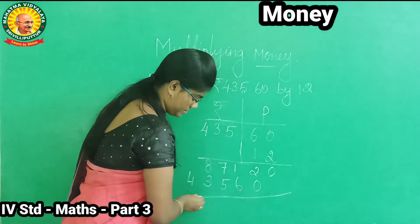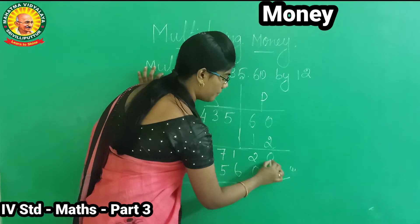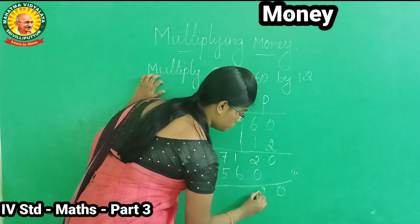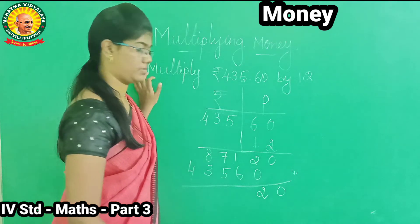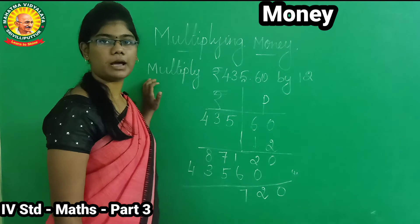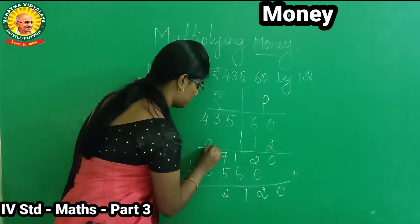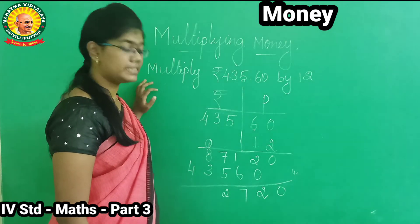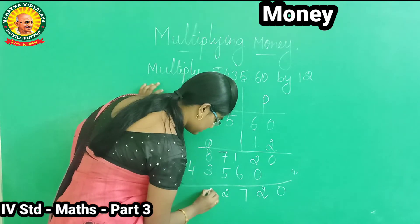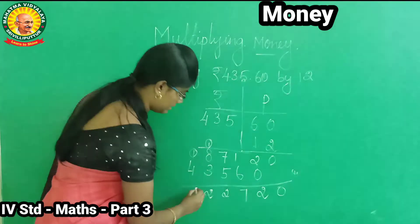Next step: add the two rows. 0. 2 plus 0 is 2. 1 plus 6 is 7. 7 plus 5 is 12 — write 2, carry 1. 1 plus 8 is 9. 9 plus 3 is 12 — write 2, carry 1. 1 plus 4 is 5.